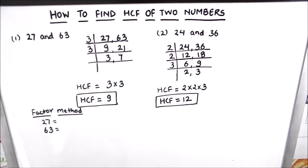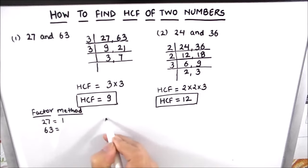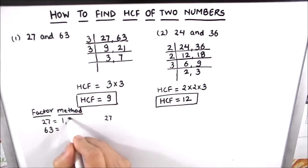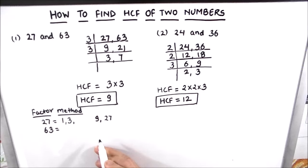27 can be written as the product of 1 and 27. Since 2 is not a factor of 27, we go to 3. 3 times 9 is 27, so 3 and 9 are factors. We have now written all the factors of 27: 1, 3, 9, and 27.